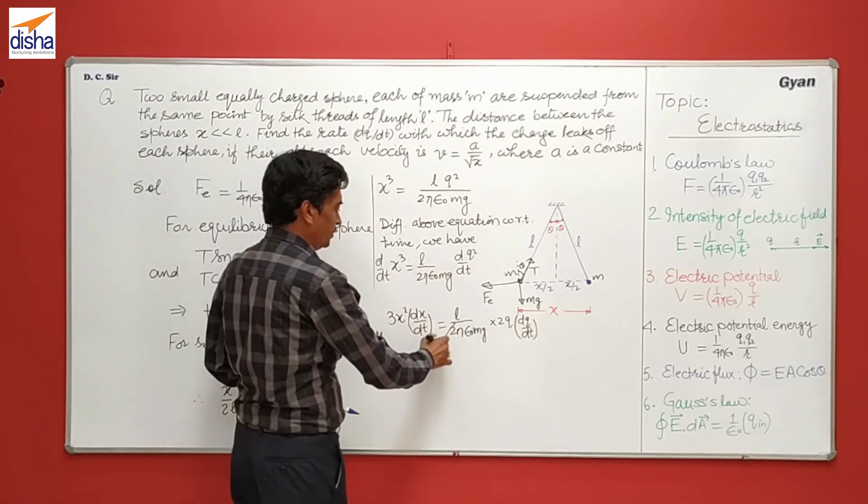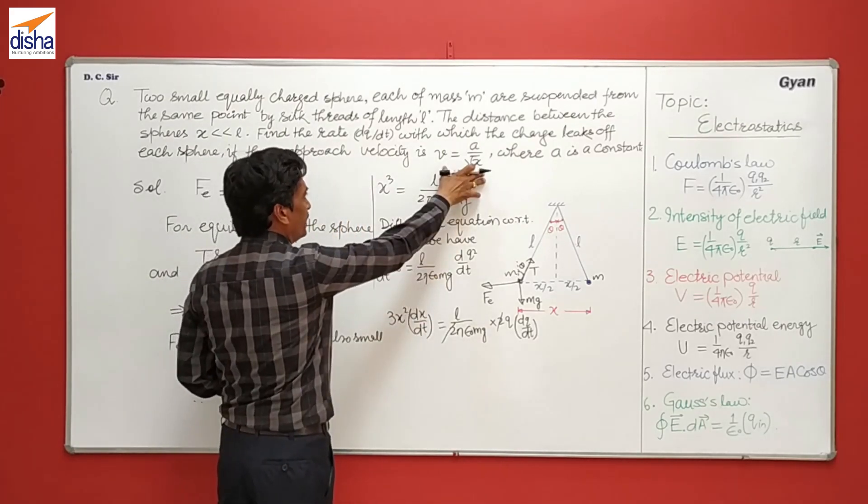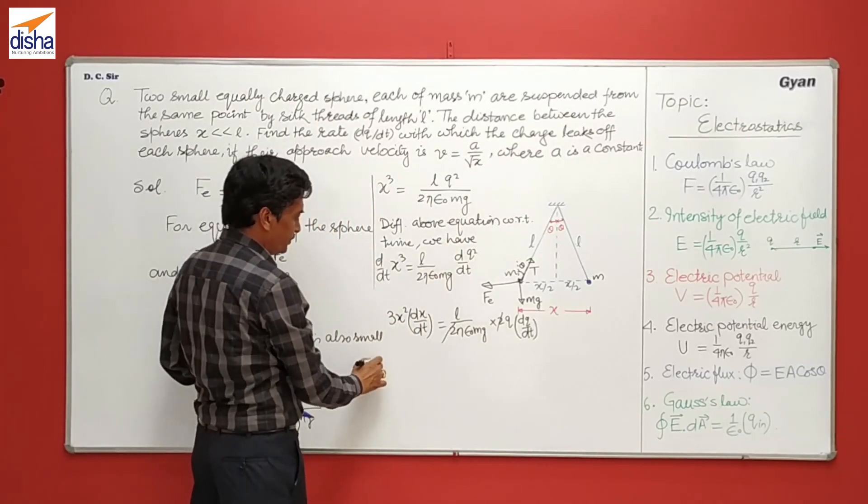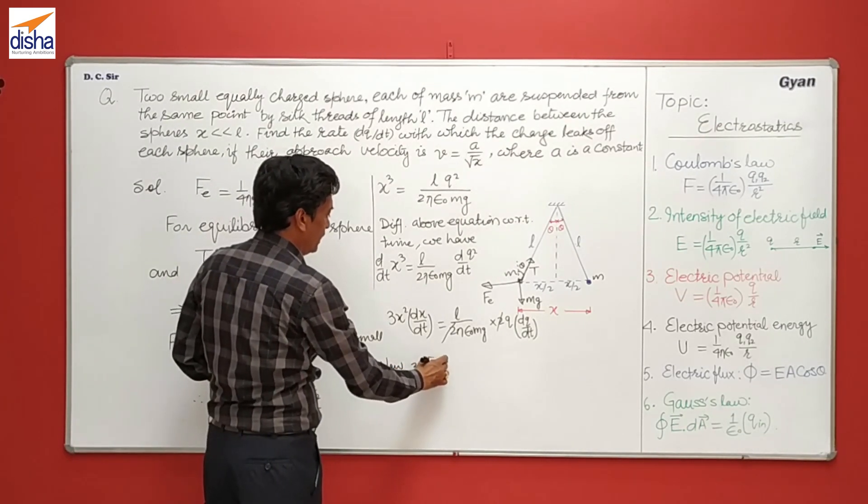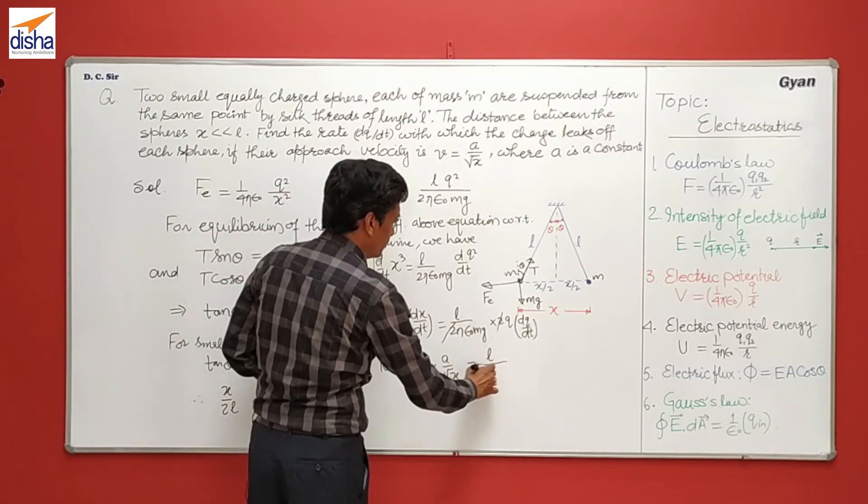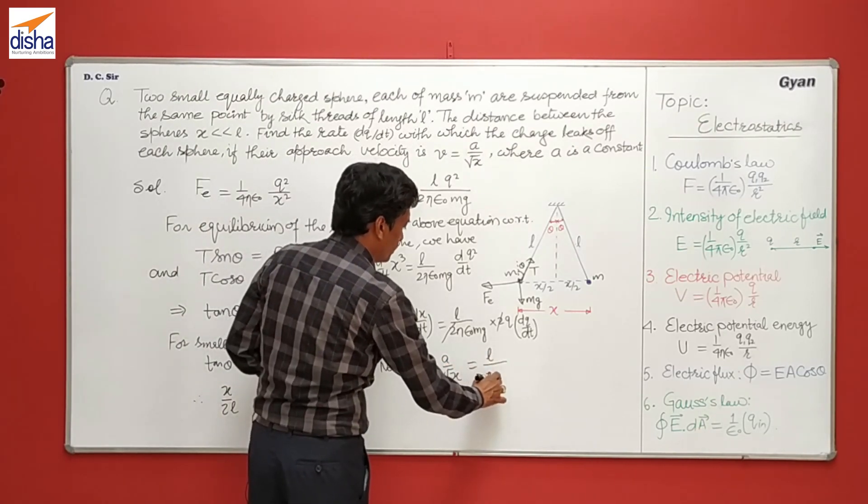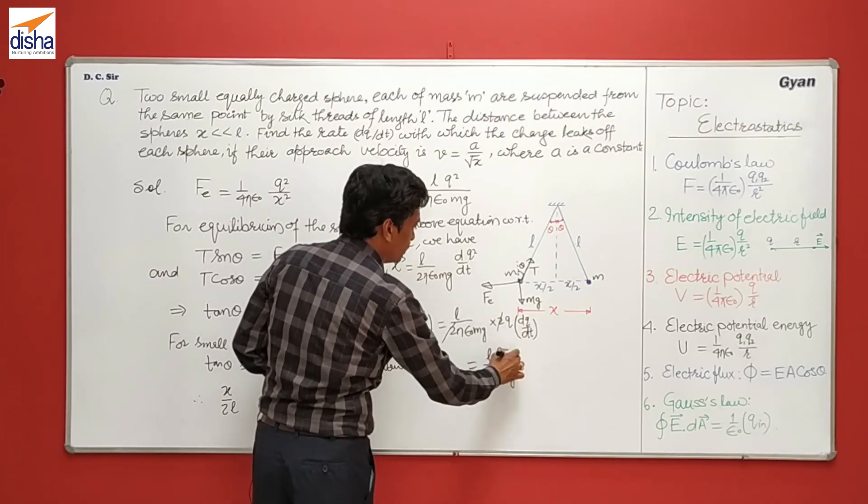So here 2 cancels out, and here dx over dt is the velocity of approach, which we have given a upon root x. So we can write 3 x squared and a upon root x, this will be L upon pi epsilon naught Mg q, and here dq over dt.